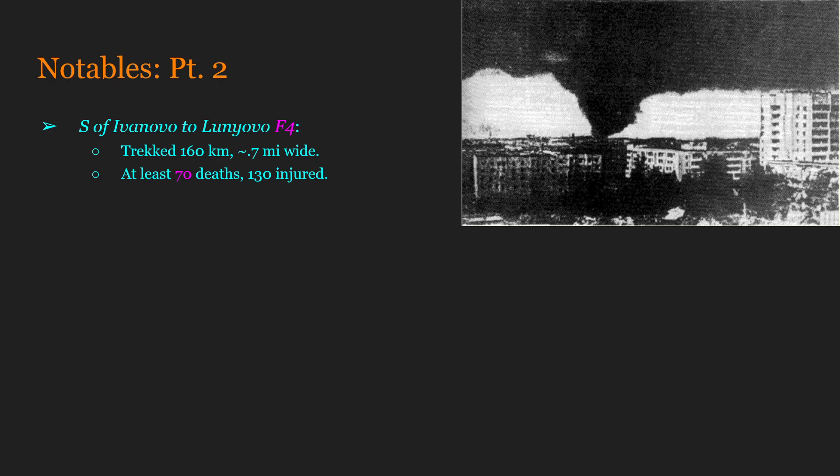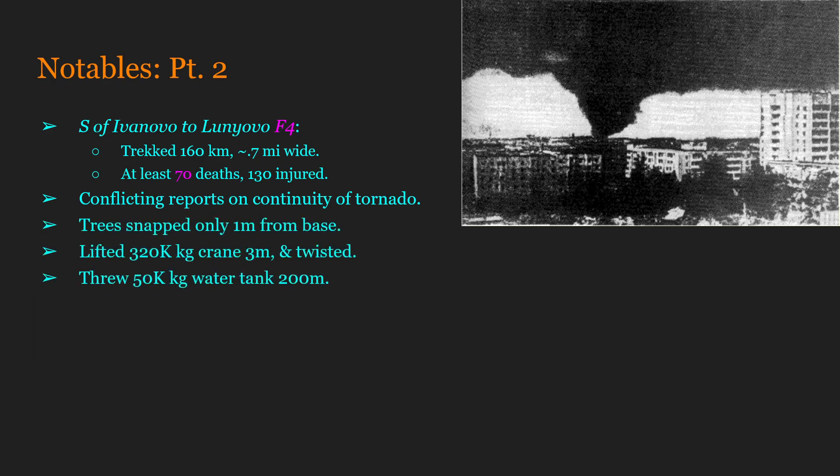There are at least 70 deaths confirmed from this tornado. Some sources I did not use cited around 80 to 90, even up to 100 deaths, however 70 is at least consistent across sources, as well as 130 people injured. There are conflicting reports on the continuity of this tornado — whether that 160-kilometer path represents one tornado or two or even three. Generally the consensus is one or two, which of course doesn't definitively settle the question.